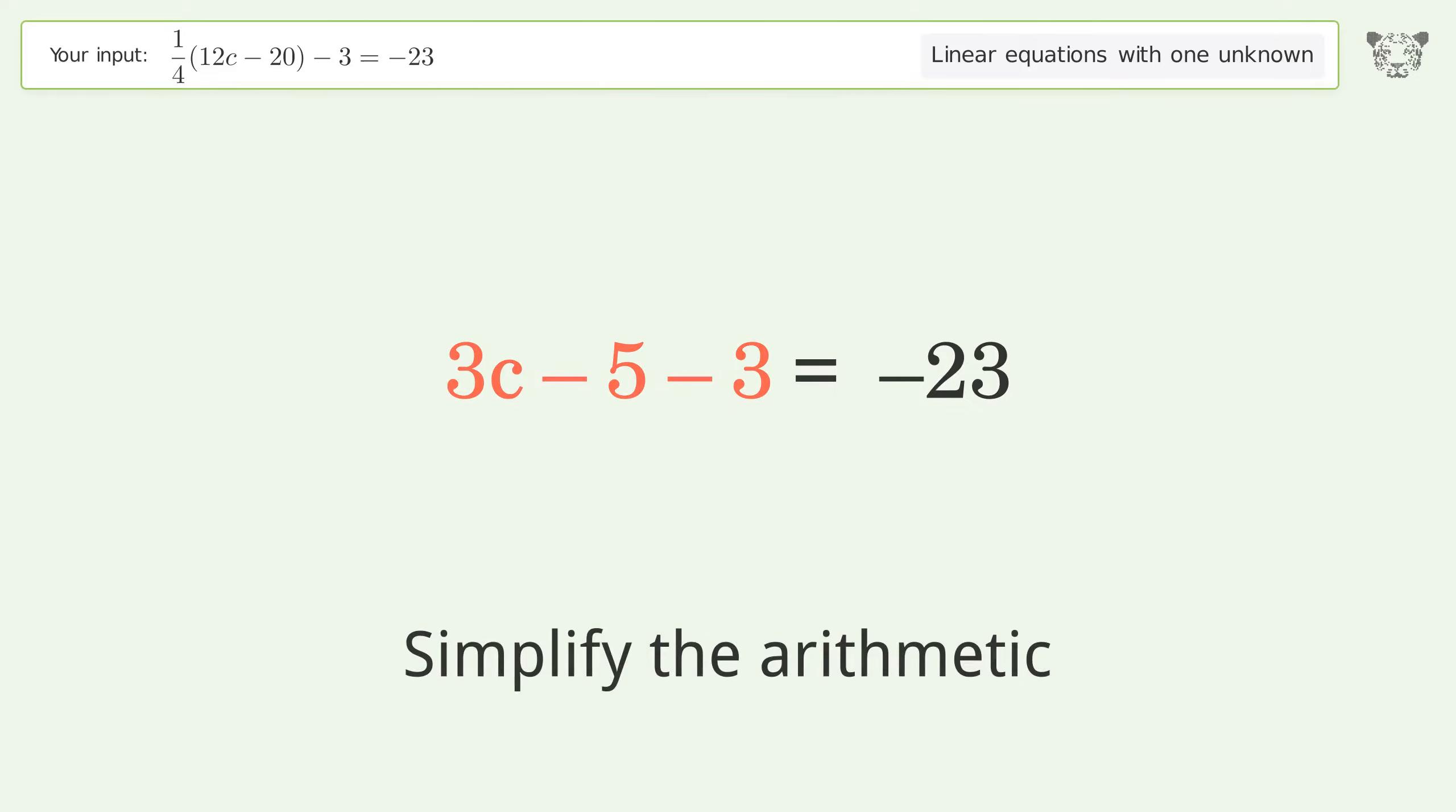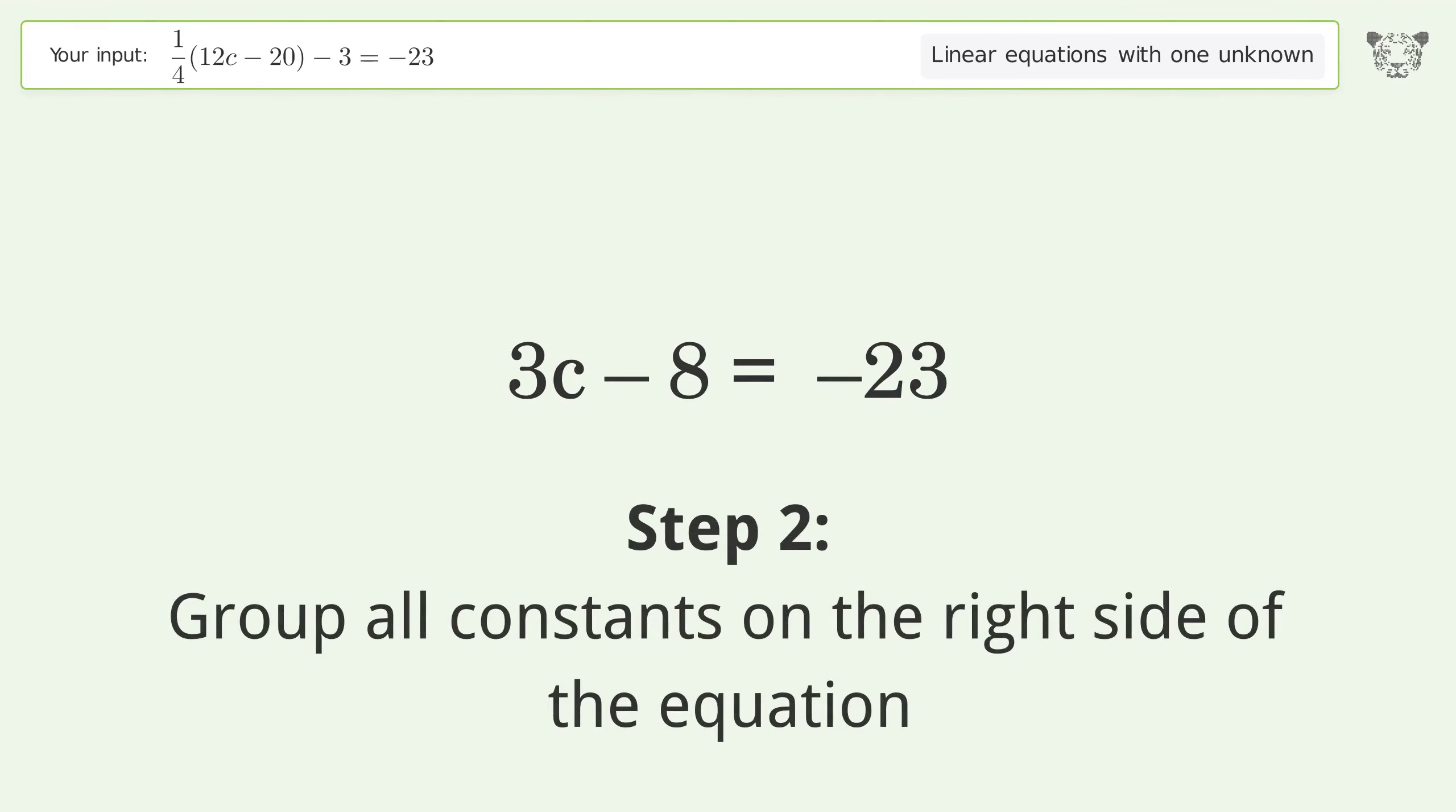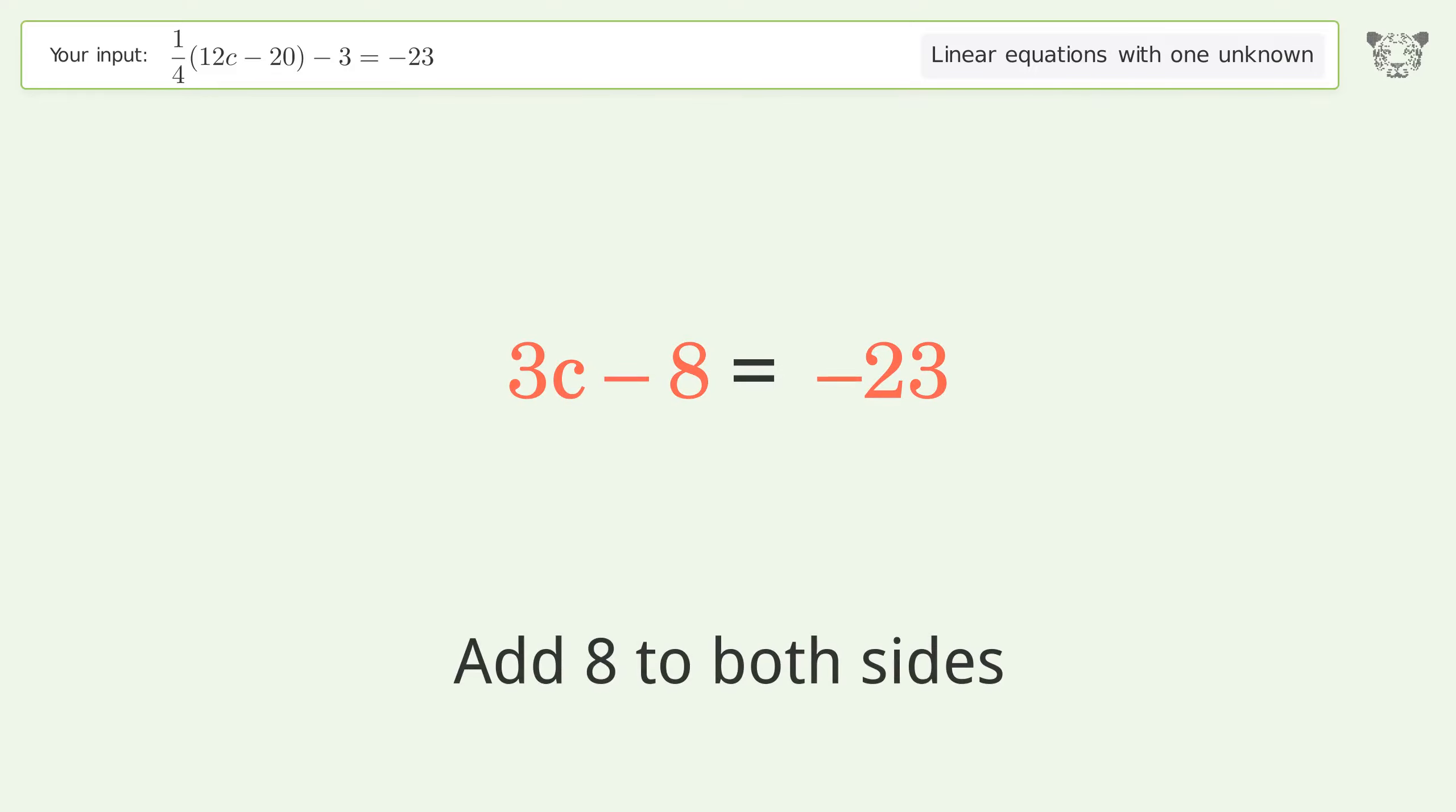Simplify the arithmetic. Group all constants on the right side of the equation. Add 8 to both sides. Simplify the arithmetic.